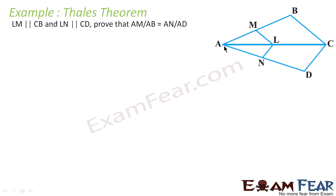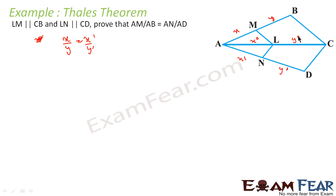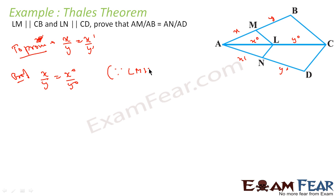Here I am going to start the proof. Let's suppose AM = x, MB = y, AN = x-dash, ND = y-dash, AL = x-not, and LC = y-not. I have to prove that x by y is equal to x-dash by y-dash. Since LM is parallel to BC, by the BPT theorem, x by y is equal to x-not by y-not. This is equation 1.